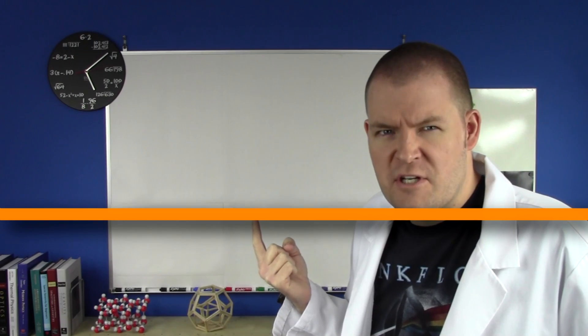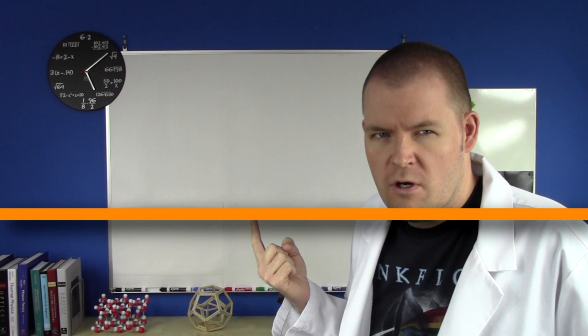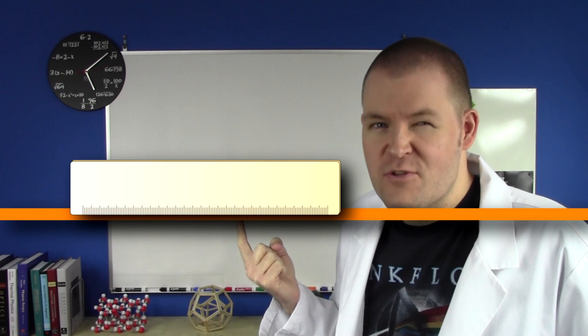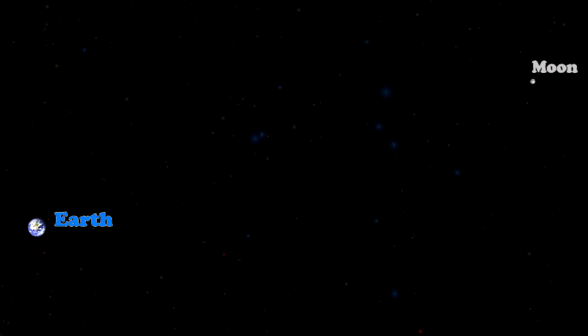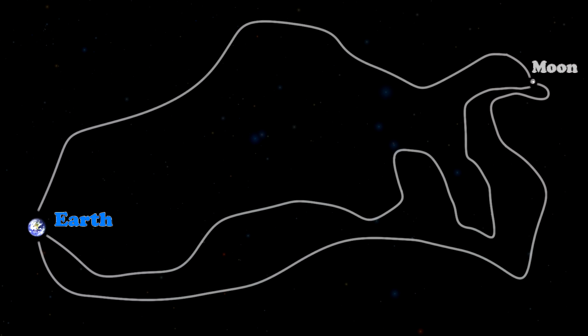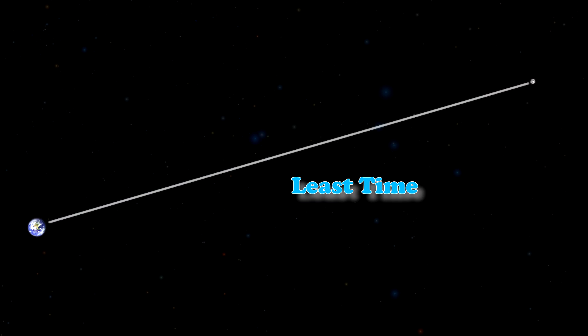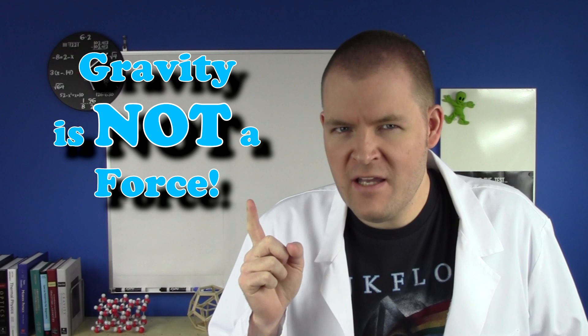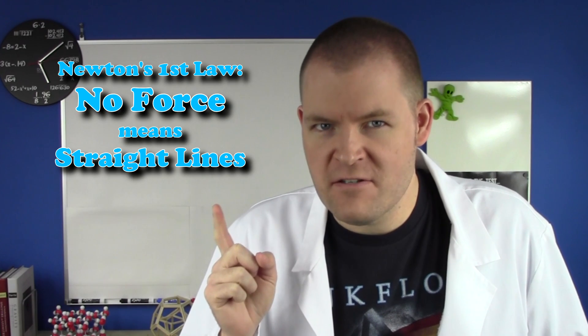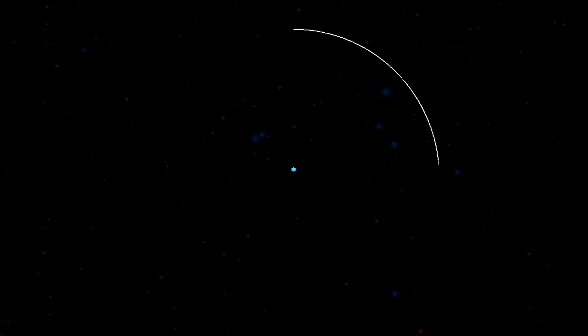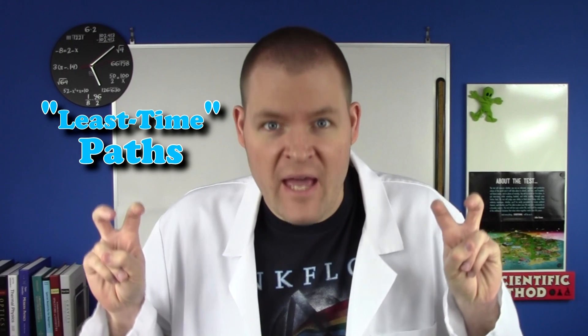This is a line. It looks pretty straight, but how can you know for sure? You could pull out a ruler, but that assumes the ruler is straight. We need something that's a little more absolute. So here's the Earth and the Moon. There are many paths between them, but the straightest one is the one that takes the least time to travel. So this is a straight line — it just doesn't look straight anymore because the Earth is there. We call them least time paths.